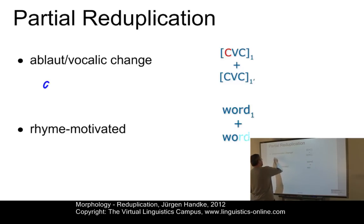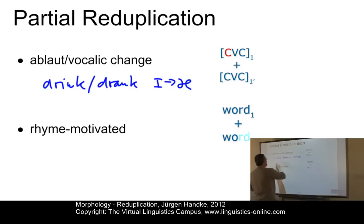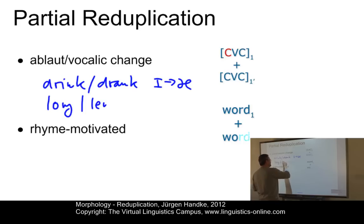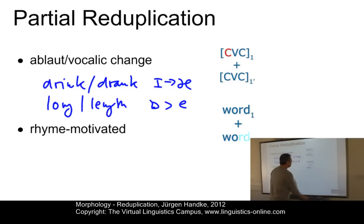For example, in inflection you have something like drink-drank, where 'i' becomes 'a'. Or in derivation, you have something like 'long', which becomes 'length' — so 'o' becomes a different vowel in British English.